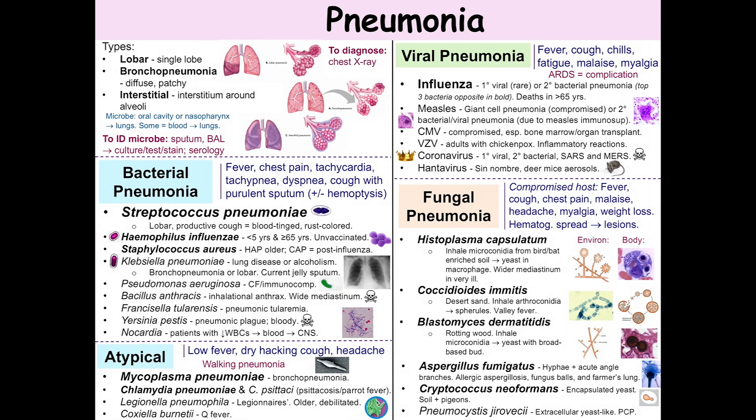Mycoplasma pneumoniae has absolutely no peptidoglycan layer — there's no cell wall — so it is resistant to beta-lactam antibiotics. It requires sterols to grow and forms colonies on media that look like fried eggs. Patients develop cold agglutinins, which agglutinate red blood cells at 4 degrees but not at 37 degrees. This is only transient, though.